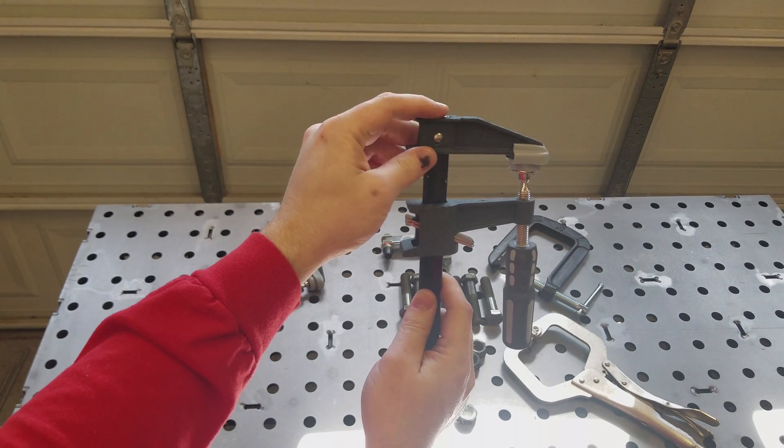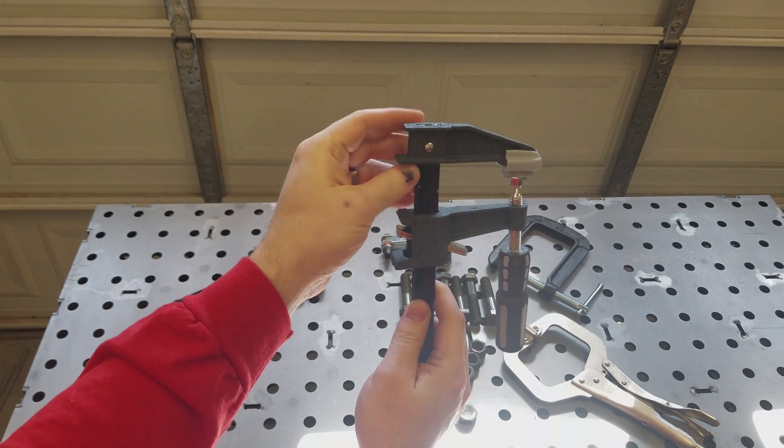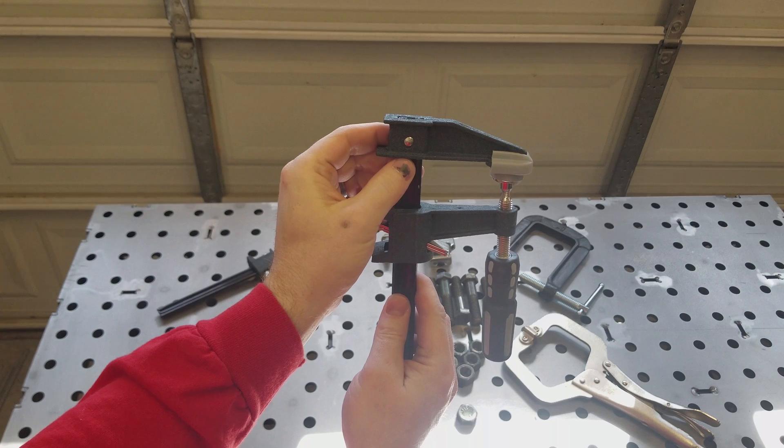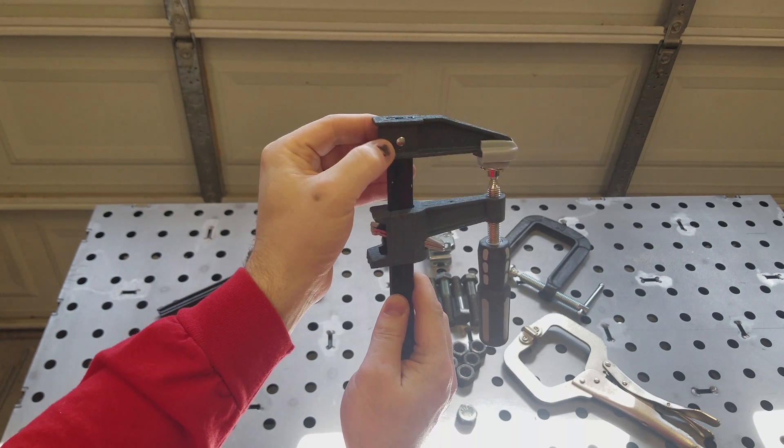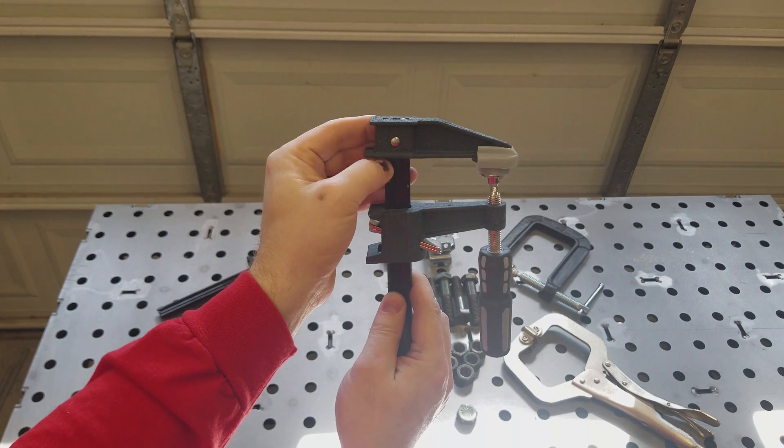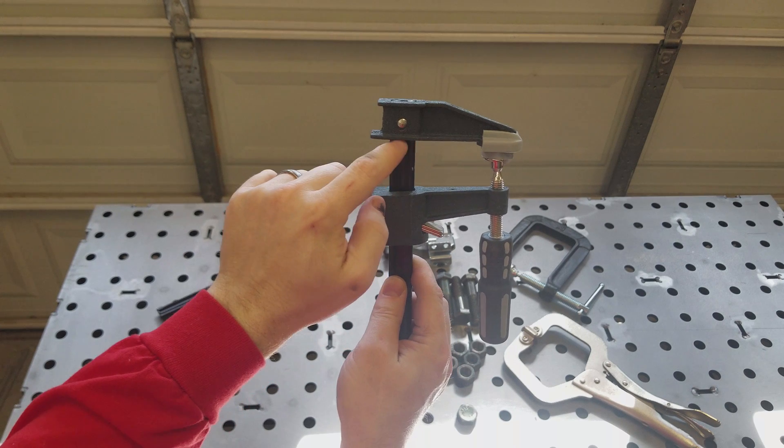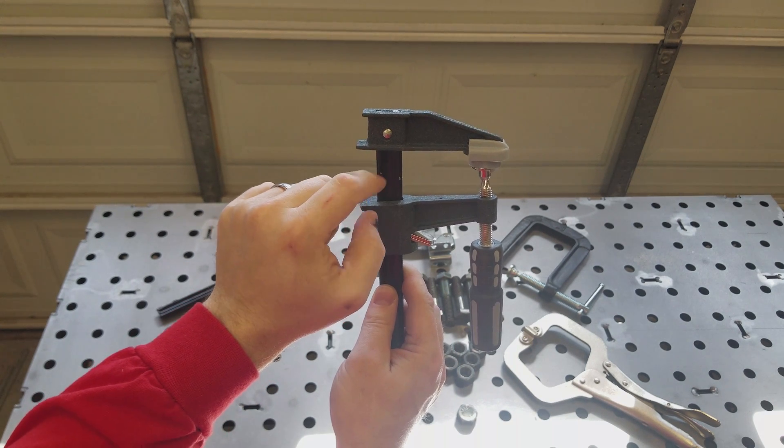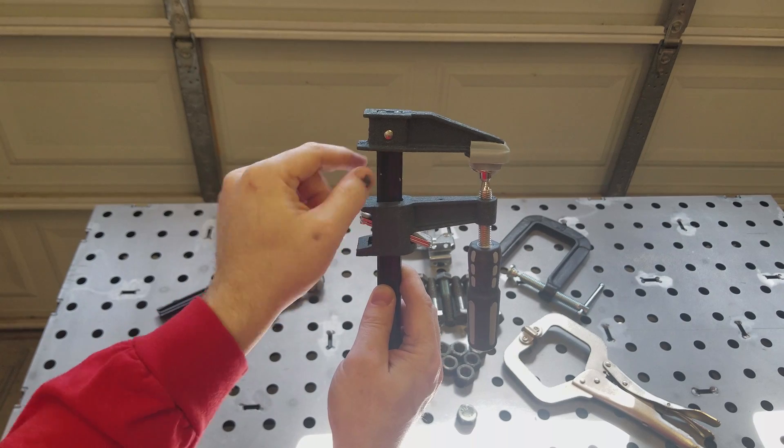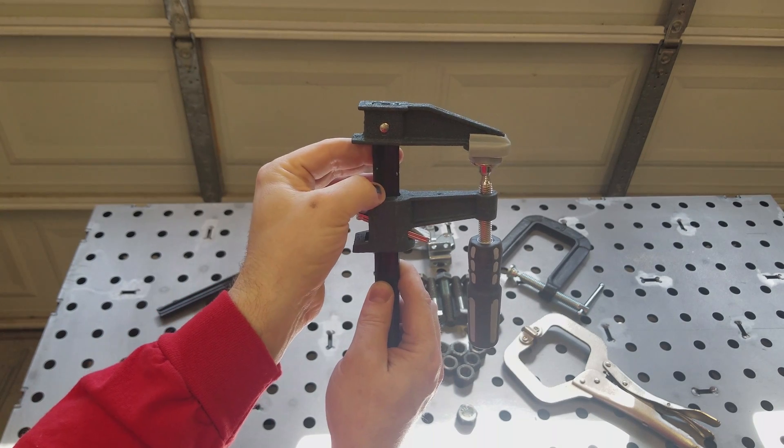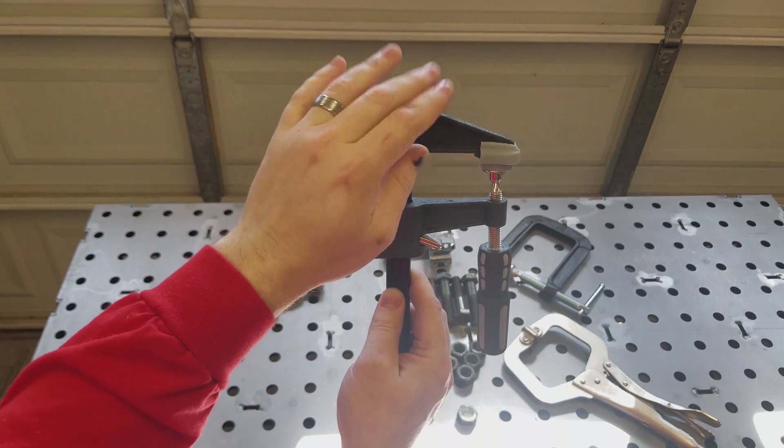Since we're not concerned about this section of the clamp, I'm going to go ahead and cut this with my porta-band saw to remove this section. We're just going to cut this flat shaft here to remove this section. We don't need this.